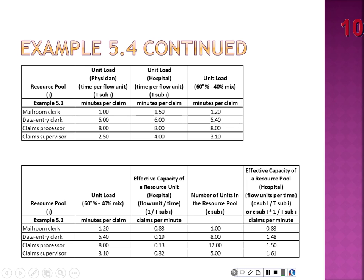To get effective capacity of the resource pool, you take number of resources times effective capacity of a single resource unit: 0.83 × 1, 0.19 × 8, etc. When we ask different questions, depending on what's asked, you may need to go back and look at unit load of a physician or hospital separately. You have to look at what types of questions are being asked. For instance, can we determine which of the two claims processed is more profitable? The answer is yes.